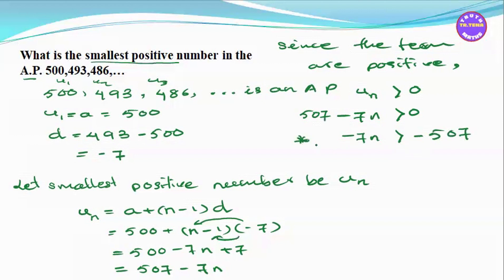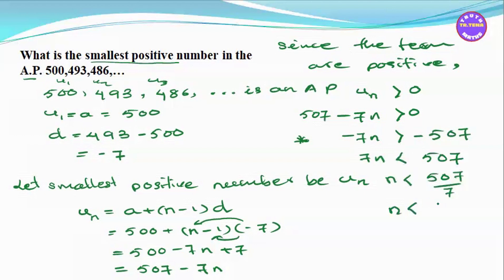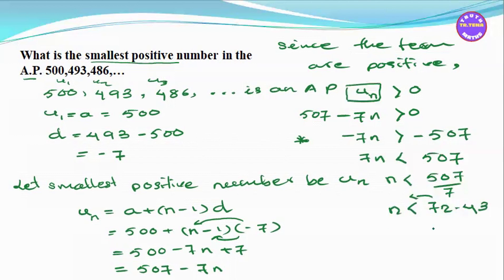This is an inequality. Dividing both sides, n is less than 507 divided by 7, which equals 72.428. So n must be less than or equal to 72.